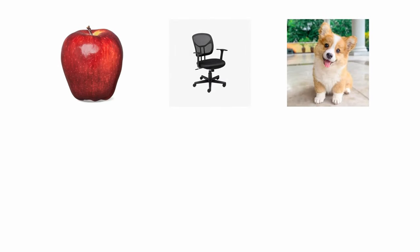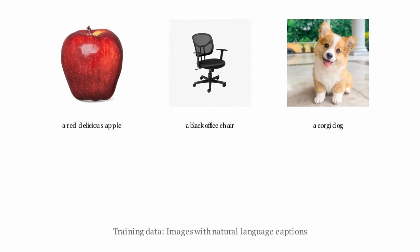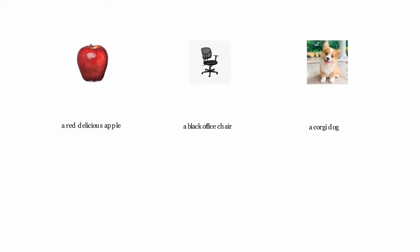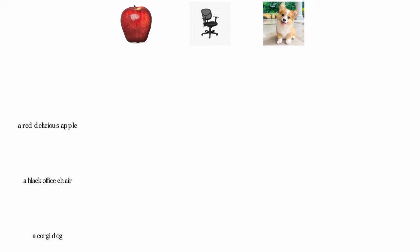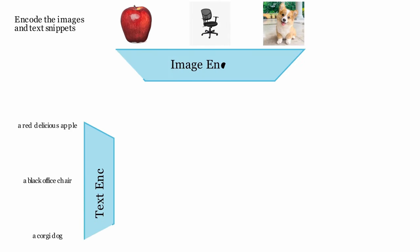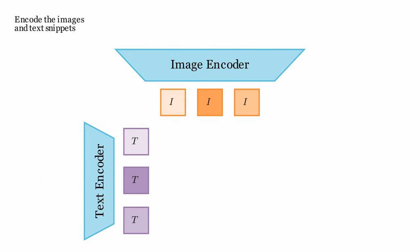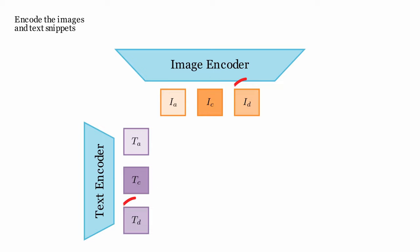Let's take a look at how CLIP is trained. Since our goal is to learn how images and text relate to the same concept, we start with a dataset of images and their captions. For every pair, we encode the text and image using their respective encoder, so we're left with a pair of vectors for each image-caption pair. In our case, we have a pair of vectors for an apple, for a chair, and for a dog.